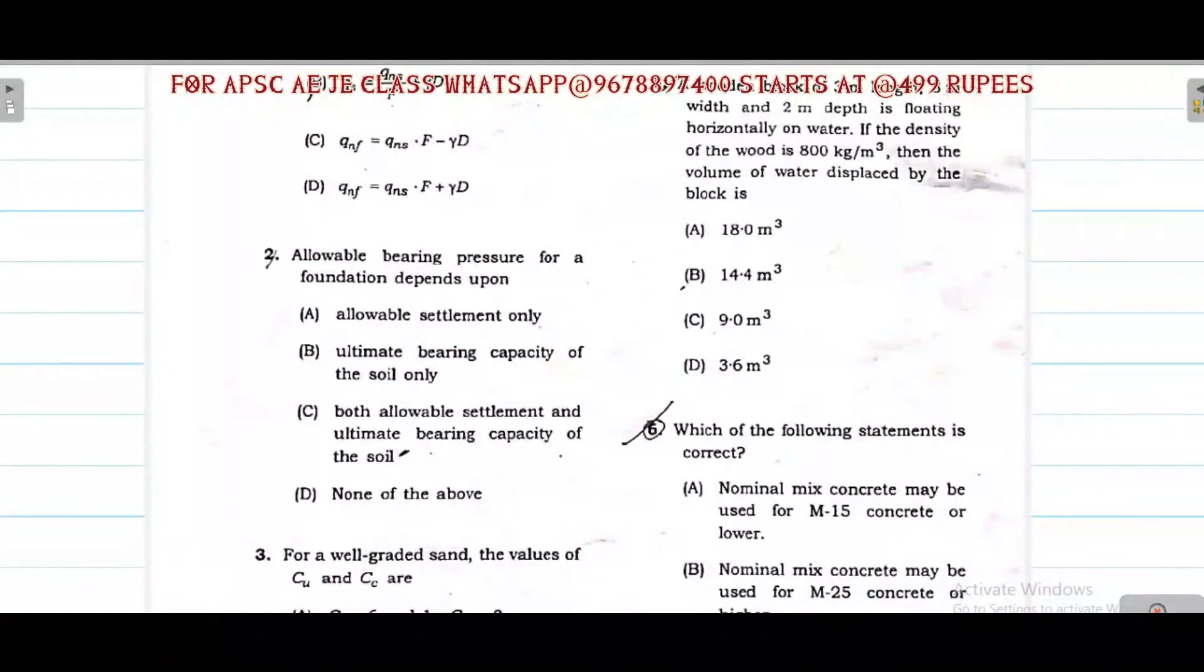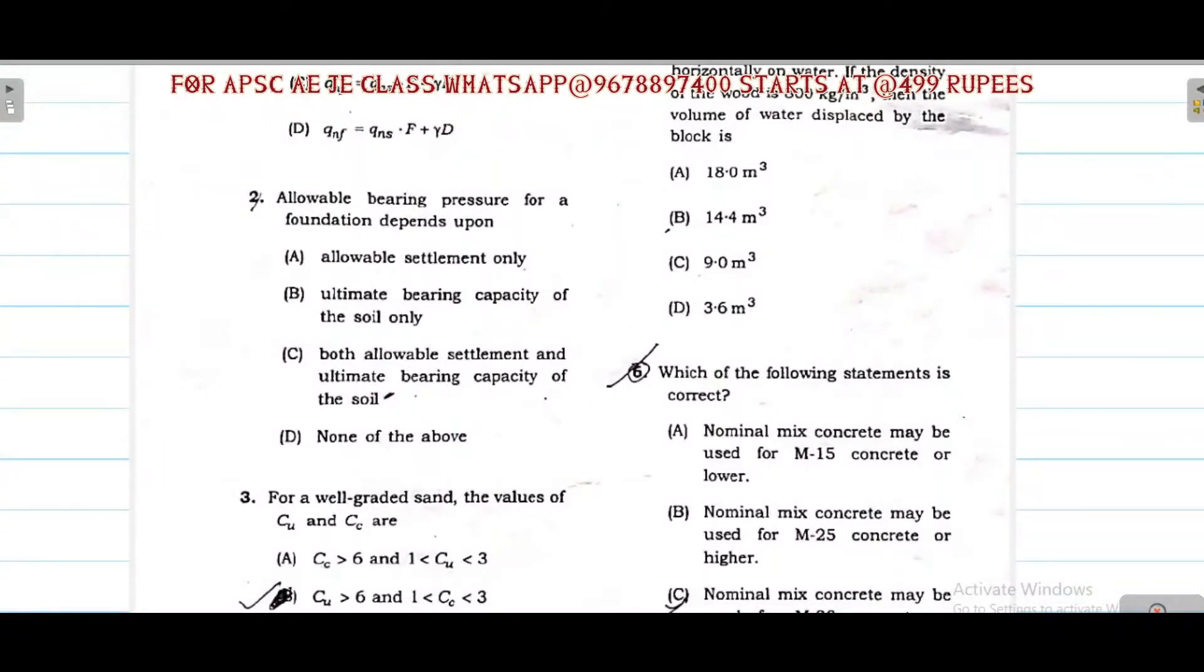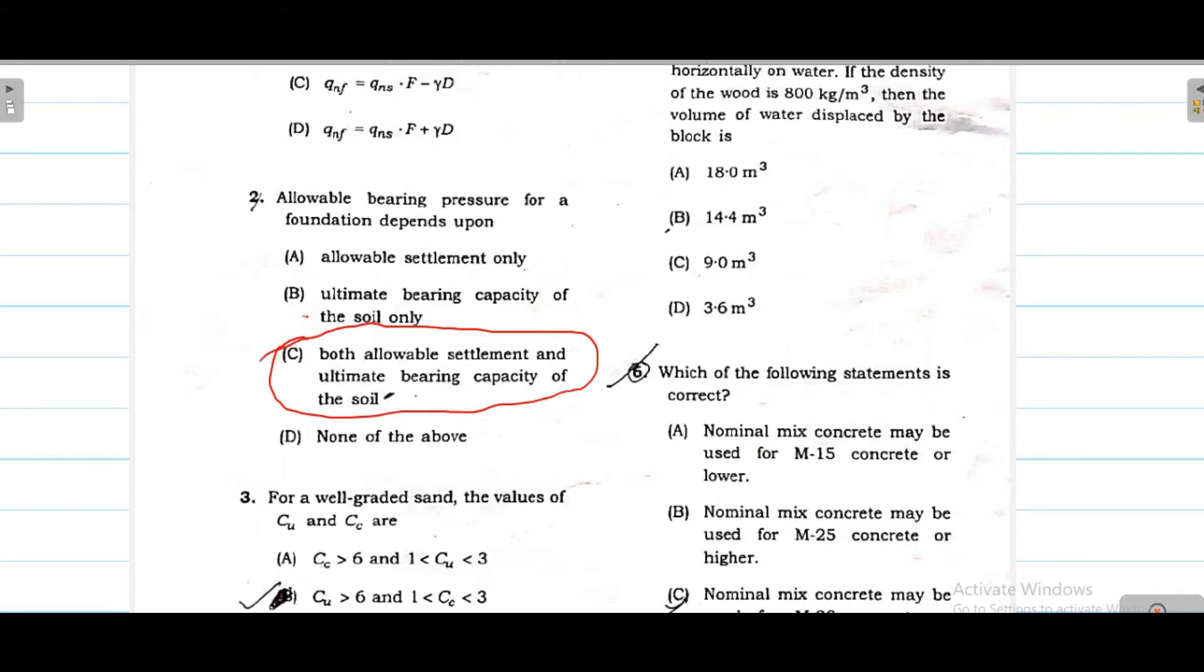Next, soil mechanics question. Allowable bearing pressure for a foundation depends on how much allowable settlement is there, as well as the ultimate bearing capacity of the soil. So here option C is correct - ultimate bearing capacity of the soil as well as allowable settlement.